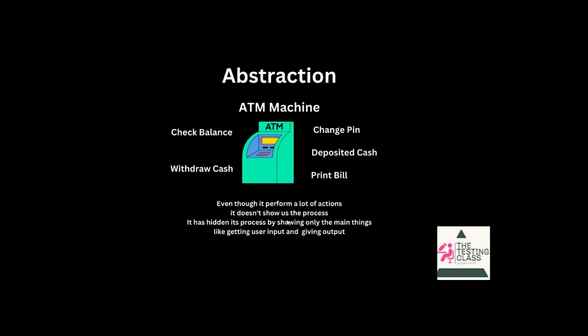Let's take the example of an ATM machine. What we can perform is: check balance, withdraw cash, change PIN, deposit cash, print bill. Even though it performs a lot of actions, it doesn't show us the process — it has hidden its process, showing only the main things like getting user input and giving output. So we have to concentrate upon what we are giving and what we are getting as an output.